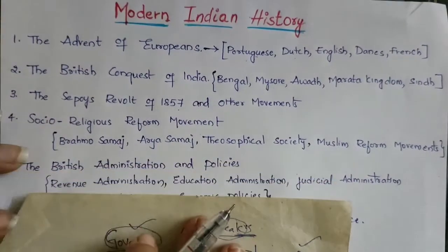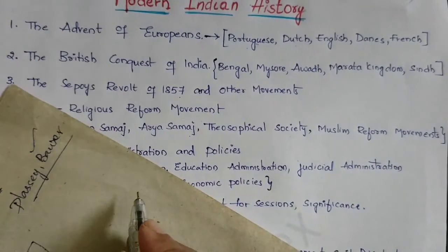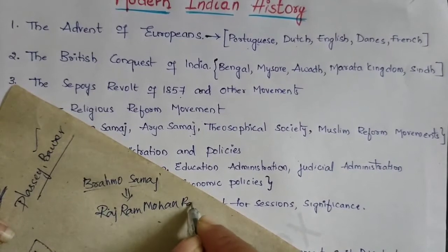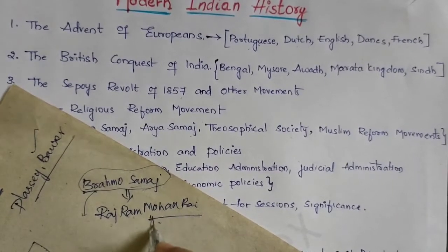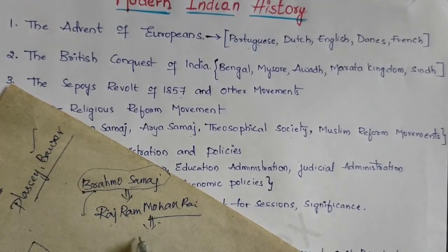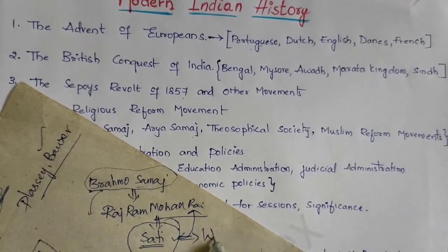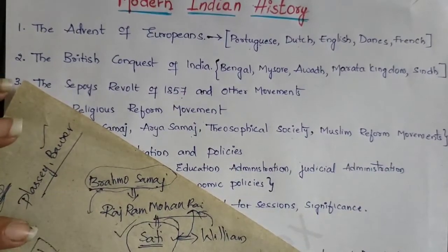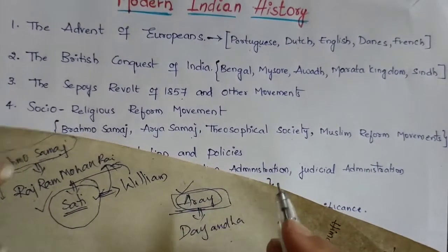Next is the Social Religious Reform Movement. This includes the Brahma Samaj, Arya Samaj, Theosophical Society, and Muslim reforms. The Brahma Samaj was established by Raja Ram Mohan Roy. He was influential in the abolition of Sati — the Sati Prohibition Act was enacted by the British government under William Bentinck. Arya Samaj was established by Dayananda Saraswati.